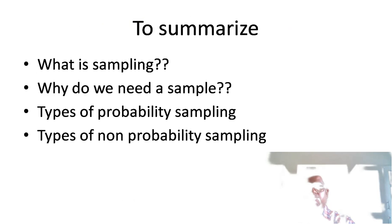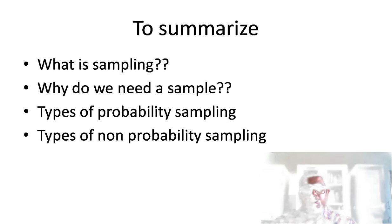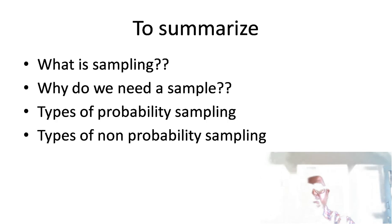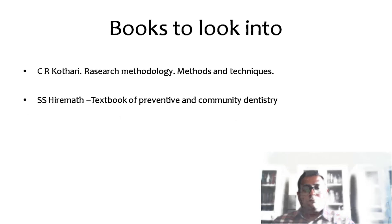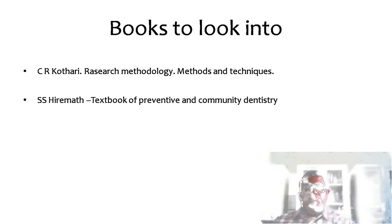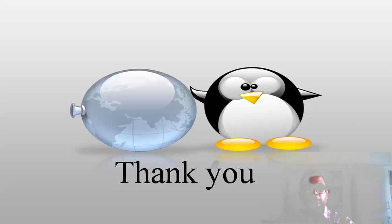To summarize: a sample is a part of the population called the universe or parent population. Sampling is a process of selecting a sample of appropriate characteristics and adequate size. We need sampling because it reduces the cost and time required and allows thorough investigation of units. Types of probability sampling include simple random, stratified random, cluster, and multi-stage sampling. Types of non-probability sampling include convenience sampling, volunteer sampling, and network or snowball sampling. These are the books you can refer to for further reading. Thank you.